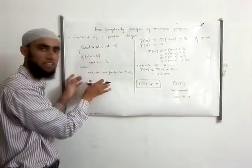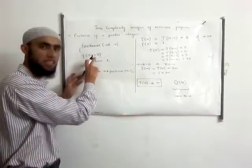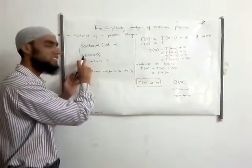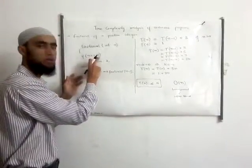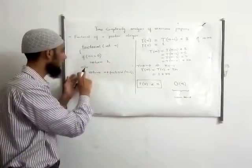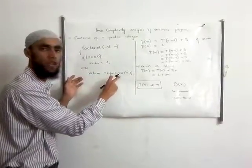So here is the implementation in which I have mentioned the base condition that represents that if n equal to 0, then return 1, else return n into factorial of n minus 1.